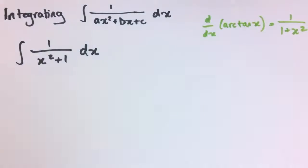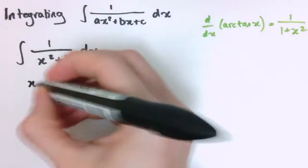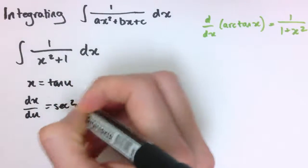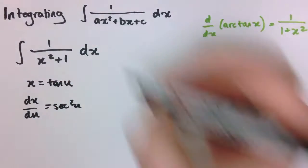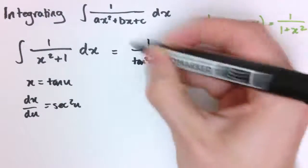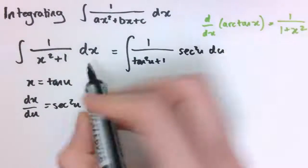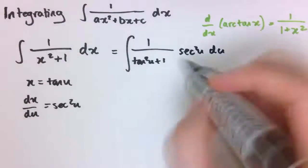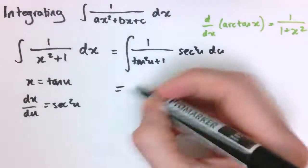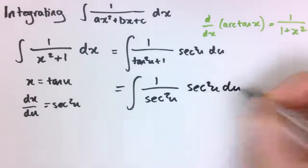Or if you wanted to do it more directly with an integration method here, we could make a substitution, x equals tan u, then we've got dx by du equals sec squared u, so when we make the substitution here we have 1 over tan squared u plus 1 times sec squared u du, and you know that 1 plus tan squared u is sec squared u, so this is the integral of 1 over sec squared u times sec squared u du.